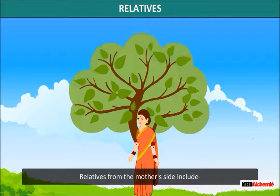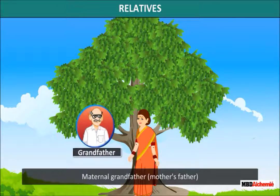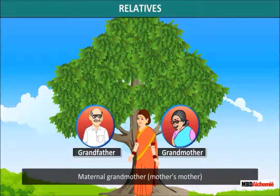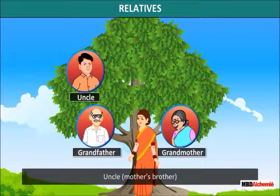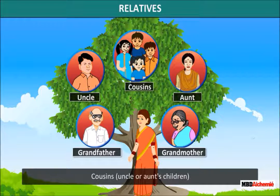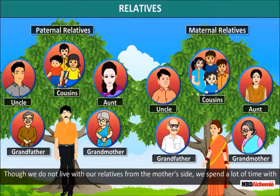Relatives from the mother's side include: Maternal grandfather (mother's father), Maternal grandmother (mother's mother), Uncle (mother's brother), Aunt (mother's sister), and Cousins (uncle or aunt's children).